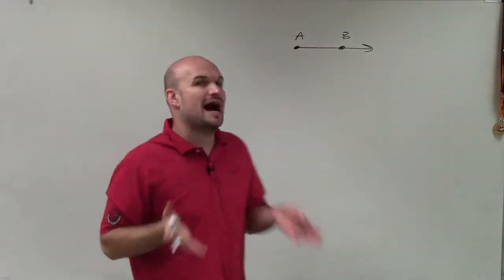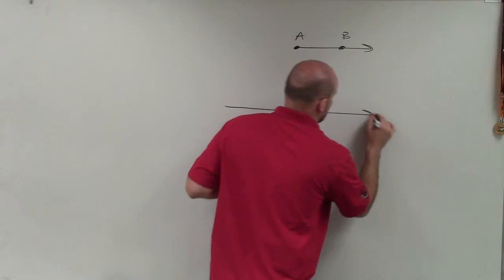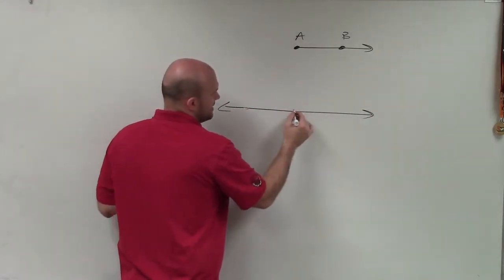So what exactly are opposite rays? Well, if we have a line, and let's say within that line we have a point B.